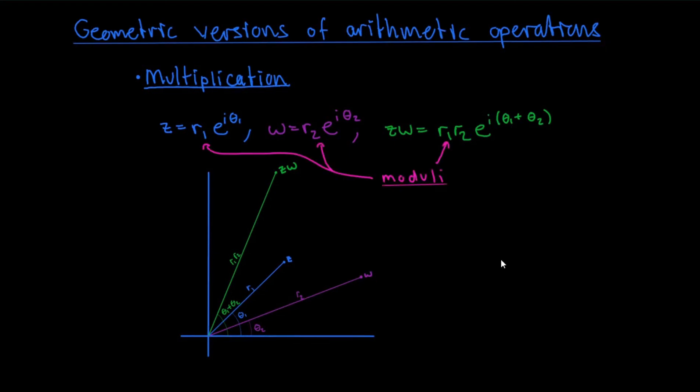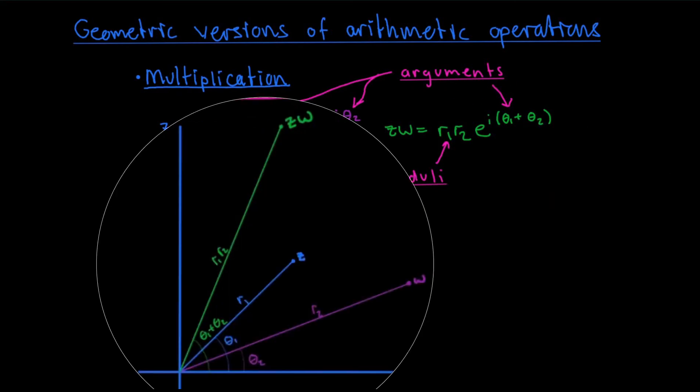As I mentioned before, the numbers r1, r2, and r1 r2 are the moduli of the respective complex numbers. The angles theta 1, theta 2, and theta 1 plus theta 2 are called the arguments of the complex numbers. I've tried to illustrate for you here what happens when you multiply two complex numbers z and w together, and the important thing to realize about that is that the arguments theta 1 and theta 2 add together and the moduli multiply.